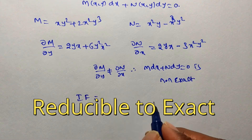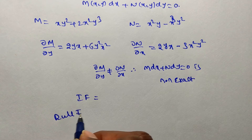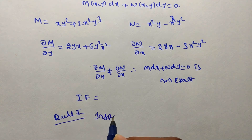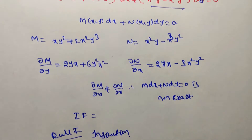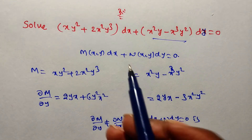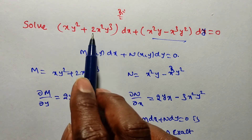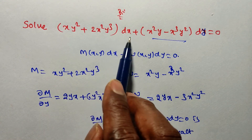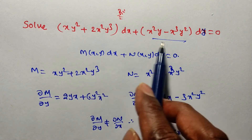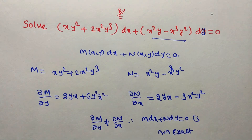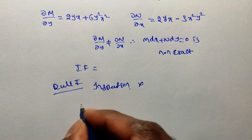To find the integrating factor we have different methods. Rule 1 is the inspection method. In the inspection method, if possible, separate the terms. Here if you take xy²dx or 2x²y³dx separately, you cannot rearrange and get a solution. So the inspection method is not possible in this case.